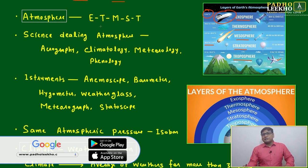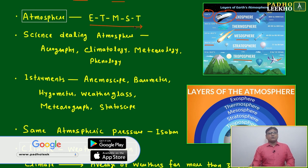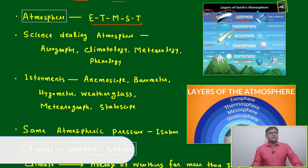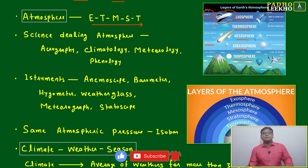You can just remember this sequence: ET MST - exosphere, thermosphere, mesosphere, stratosphere, troposphere.